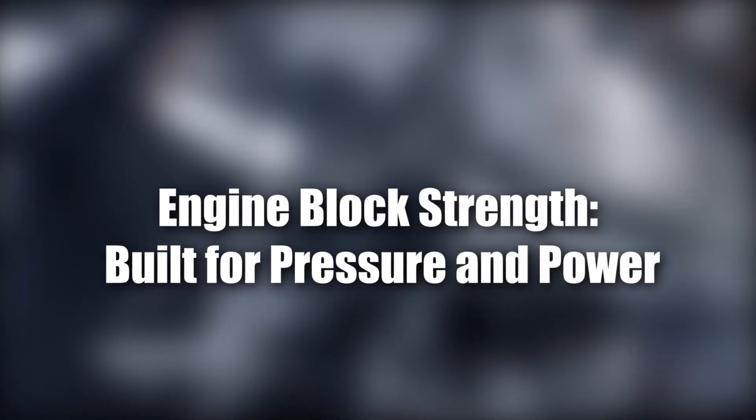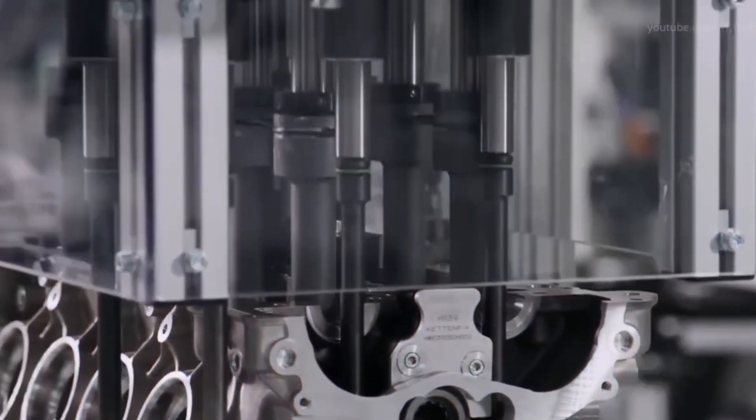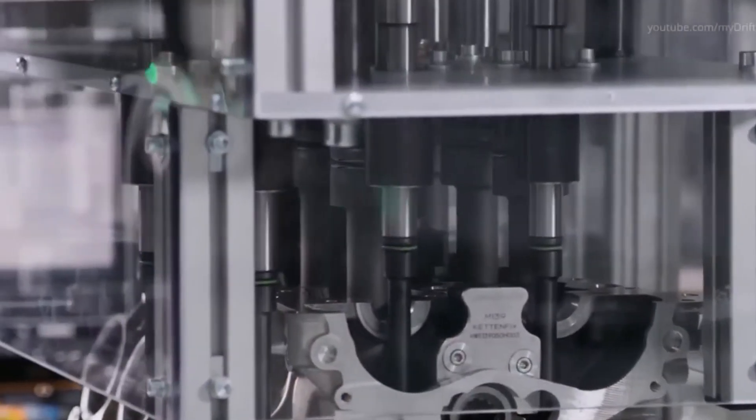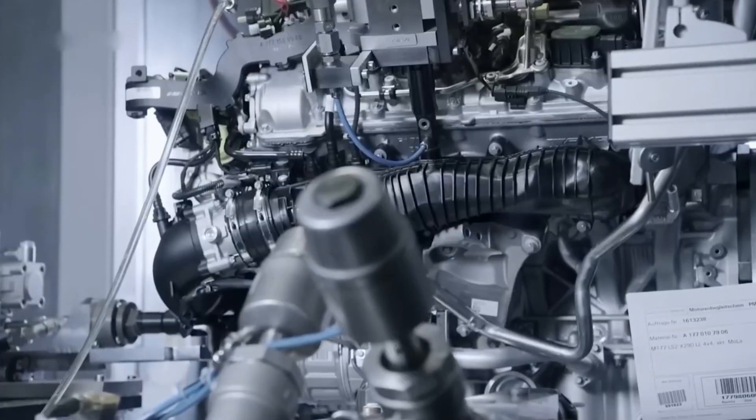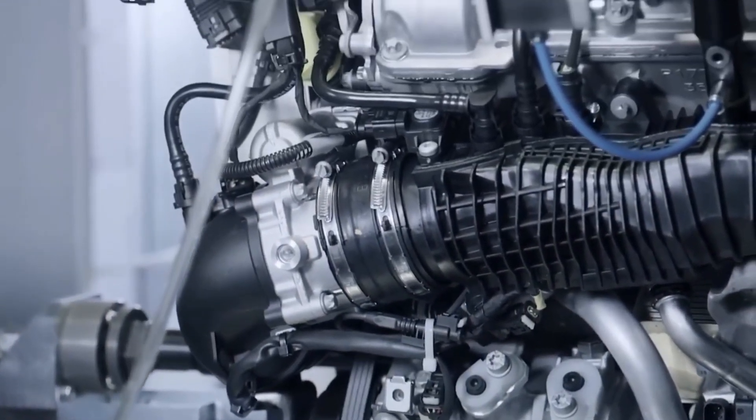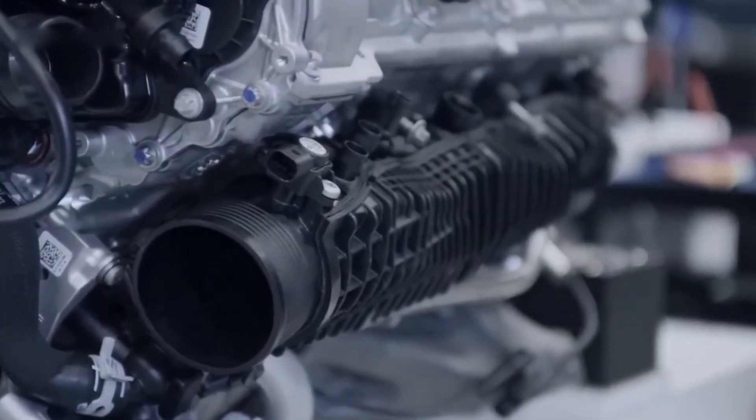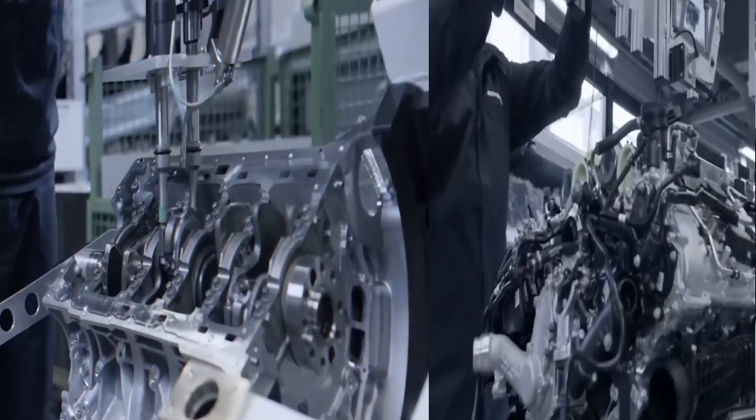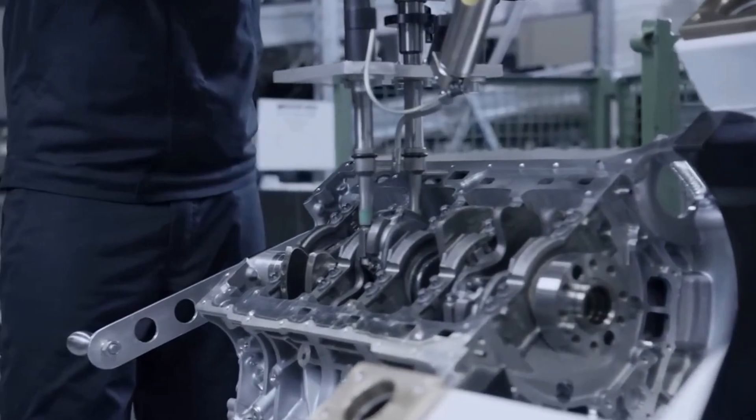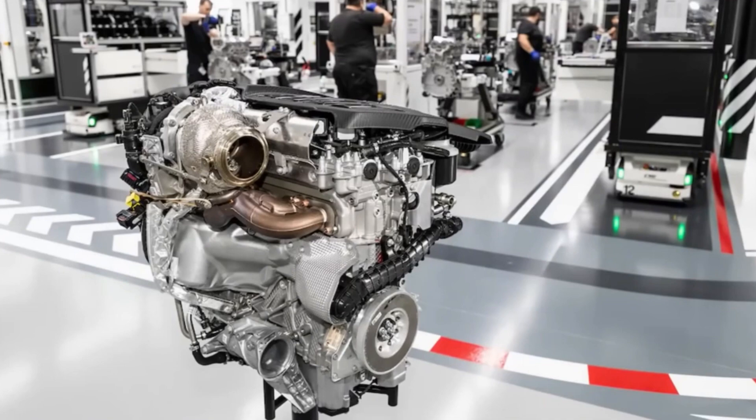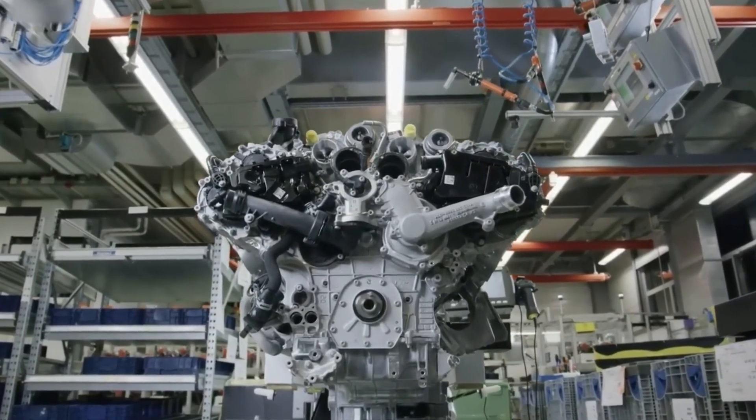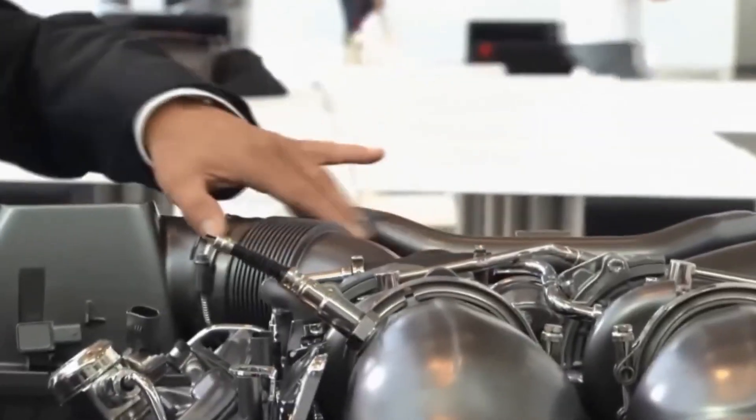Handling extreme power requires an engine block that's as strong as it is innovative. The M139 achieves this with a closed-deck design, forged pistons, and a robust crankshaft. This setup provides unmatched structural rigidity, withstanding peak cylinder pressures of 160 bar, far beyond what most engines can handle. Combined with an electric coolant pump that ensures efficient cooling, the engine block's design makes the M139 not only durable but also a consistent performer under high-stress conditions.